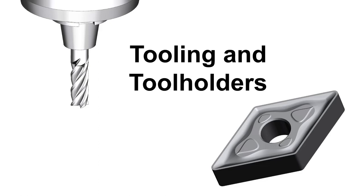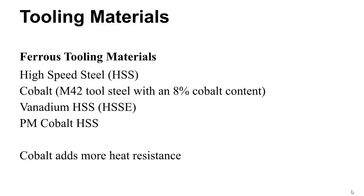We'll look at tooling and tool holders for CNC. First, we'll talk about tooling materials — what the tools are made out of. There are ferrous tooling materials; you can get high-speed steel. It's not so popular nowadays but still used for certain types of tools — a lot for taps and drill bits and things like that.